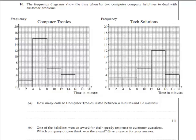In part A of this question we are asked to count up how many calls were made to Computertronics between 4 and 12 minutes. So this is the sum of the bar at 4 to 8 and the sum of the bar from 8 to 12.